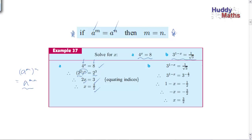Let's try another one. We write both sides as powers of the same base. One side is neatly a power of 3. For the other: 1 over 3 to the half — 1 over means a negative exponent, so you need to be good with your rules. Then 1 take x equals negative half, equating powers. X has been multiplied by negative 1, with a plus 1 added, so subtract 1 from both sides: negative half take 1 is negative 3 over 2, then multiplying by negative 1 gives x equals 3 over 2.